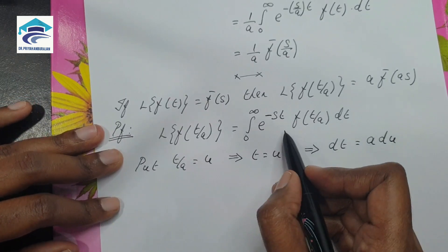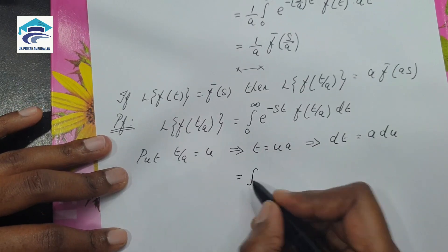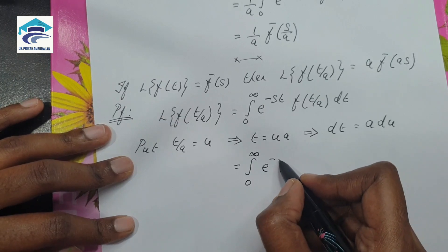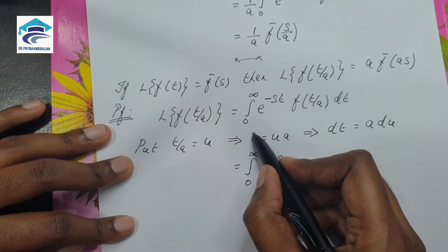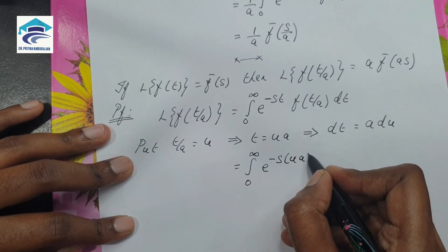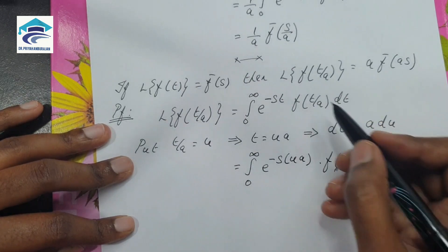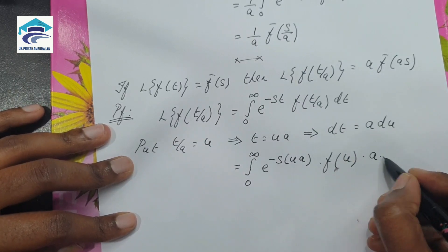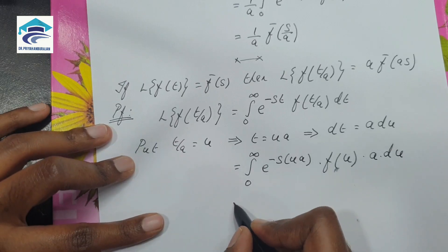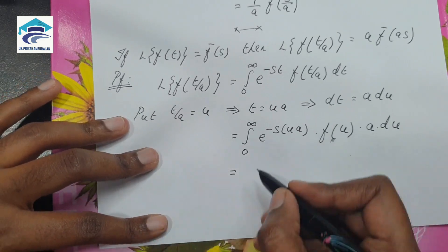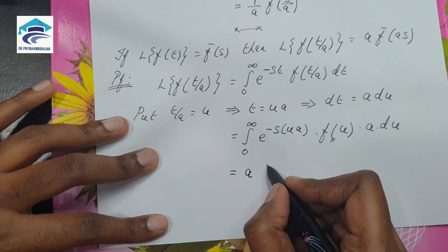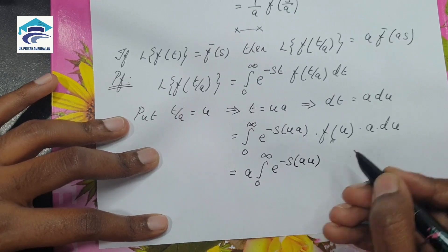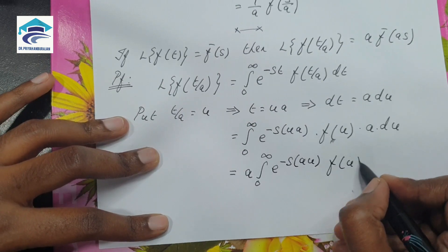Applying everything on the right hand side, the integration remains the same from 0 to infinity. We have e to the power minus s times ua, f(t/a) becomes f(u), and instead of dt it is a times du. Taking the constant outside, this becomes a times the integral from 0 to infinity of e to the power minus (sa) times u, times f(u) du.